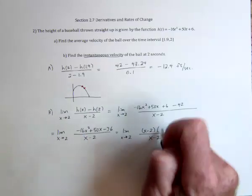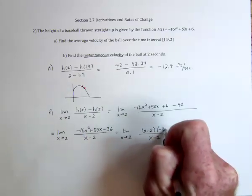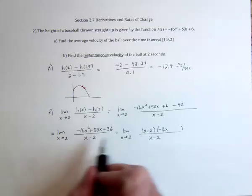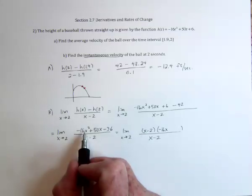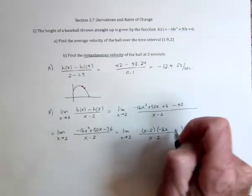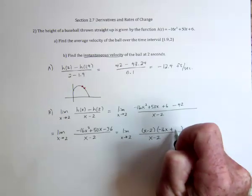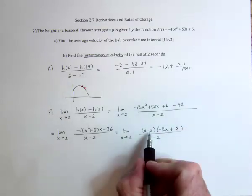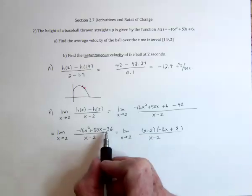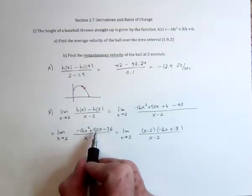Well, with the x's, I would need a negative 16x times x is negative 16x squared. And then this would need to be a positive 18 times a negative 2 would be negative 36. But now we need to make sure that that works for this 50x, see if that's right.